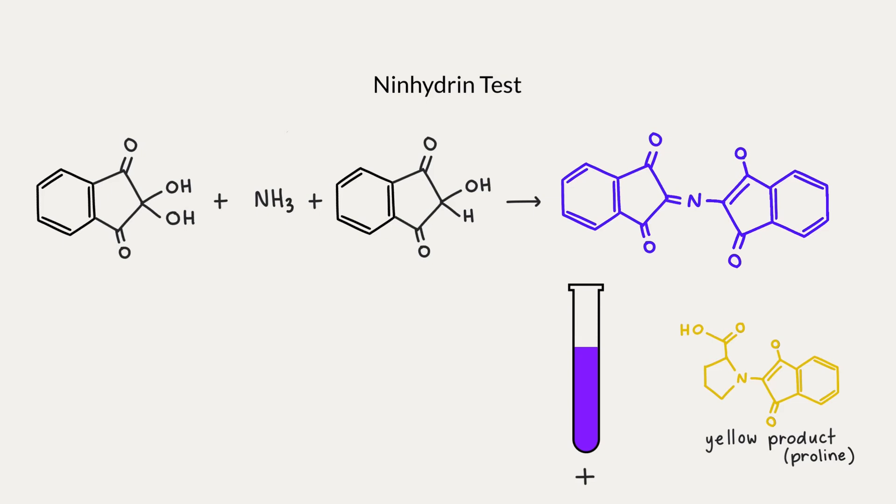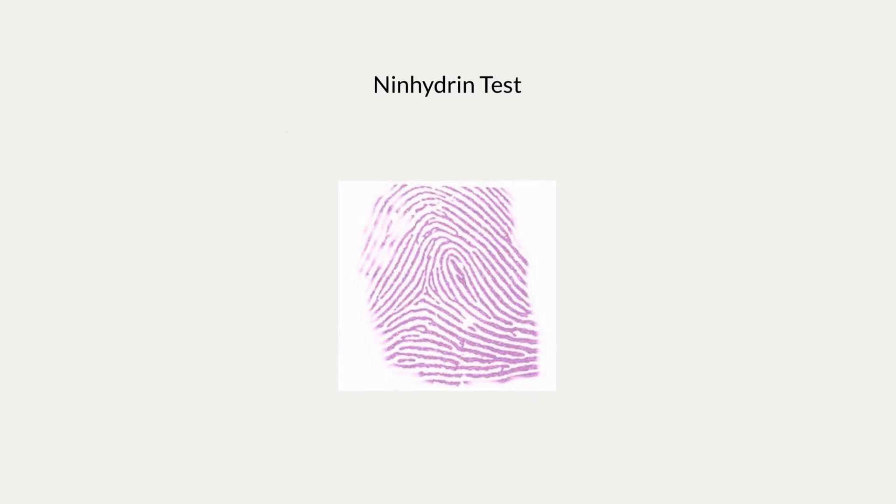If it turns dark purple, it means that there were proteins or amino acids present, with the exception of proline. Proline and hydroxyproline give a yellow colour because they aren't alpha amino acids. When proline is in a peptide bond, it doesn't have a hydrogen on the alpha carbon, so it can't donate a hydrogen bond to stabilize an alpha helix or beta sheet the way other amino acids can. Fingerprints contain small amounts of amino acids, so ninhydrin is also used at crime scenes to detect fingerprints.